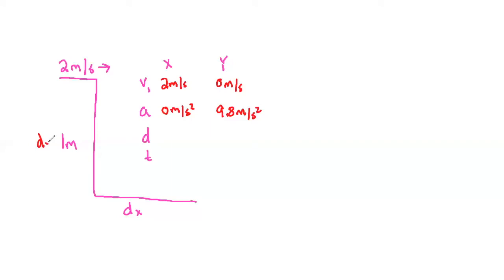So D in the Y direction, remember, this is D in the Y. That is going to be equal to one meter. And this is what I don't know. But now when we see in the X direction, I have two unknowns. But in the Y direction, I have one unknown. So the goal, once again, guys, the goal, find time.